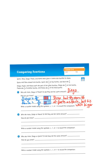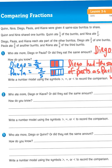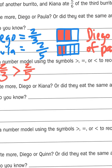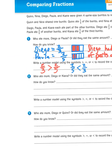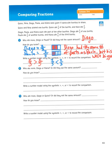So then it says write a number model using symbols — greater than, equal, or less than — to record the comparison. I would write the fraction two-thirds, and then I would write the fraction two-fifths, and then I would write the greater-than symbol. Or, if I reversed the order and wrote two-fifths then two-thirds, I would point the alligator's mouth open to the two-thirds, or write the less-than symbol. So either one of those inequalities would be correct.